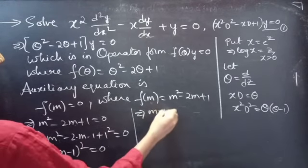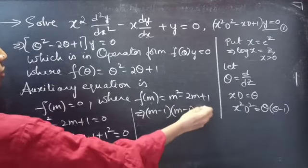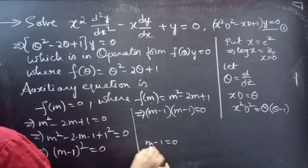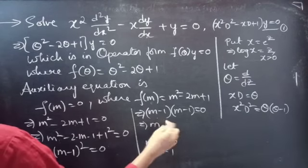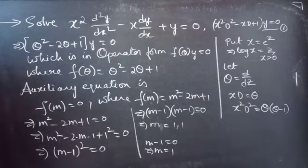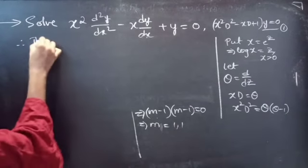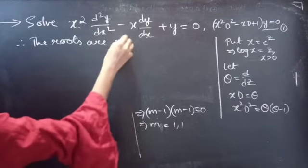Then (m minus 1)(m minus 1) equals to 0. Equating each factor to 0: if m minus 1 equals 0, then m equals 1. Since (m minus 1) is repeating twice, we will get two roots — repeated roots. Or we can say the roots are equal. Therefore, the roots are real and equal.